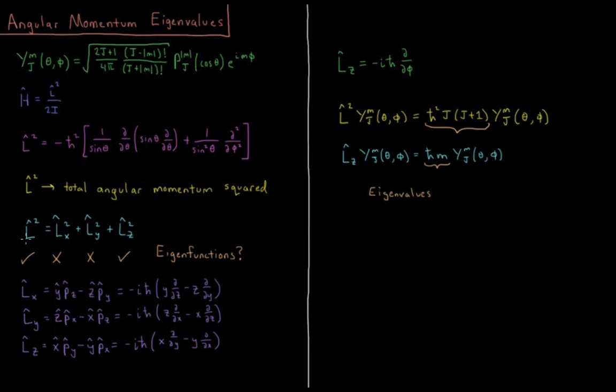The total angular momentum squared is equal to the x-component squared plus the y-component squared plus the z-component squared.